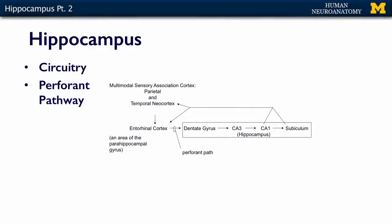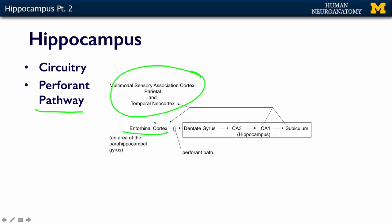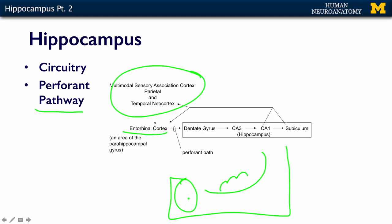The circuitry of the hippocampal formation is somewhat complicated, but I want to give you an overview of how we think it works. This is called the perforant pathway. All of the afferent connections — from multimodal sensory areas — feed into an area called the entorhinal cortex, which is part of the temporal lobe just outside the hippocampus.